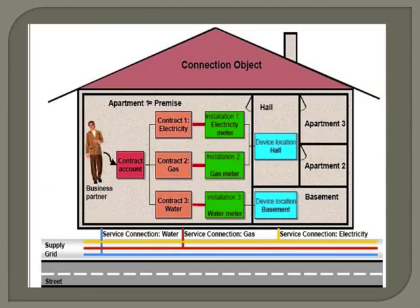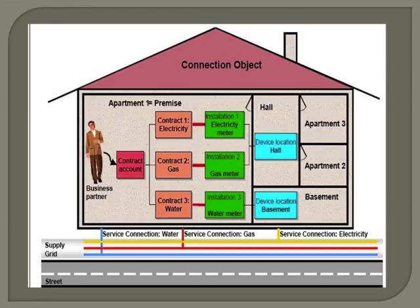Business master data is integrated with technical master data. Technical master data comprises technical objects maintained in ISU — most of which come from the plant maintenance module in SAP. The main technical master data includes configuring and maintaining objects such as connection object, premise, and device location. A connection object is the building, plant, or location where the connection is given from the utility company. The premise is the enclosed spatial arrangement which receives consumption — for example, an apartment. The device location is where the devices are physically mounted, sharing the same address as the connection object.